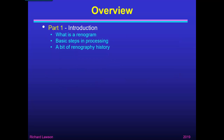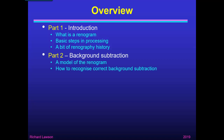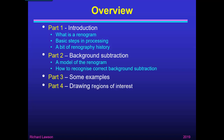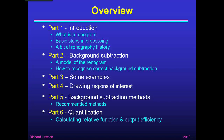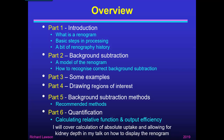The talk is divided into six parts. In part one, I'll give an introduction explaining what a renogram is, the basic steps involved in processing a renogram, and some relevant renography history. In part two, I'll discuss background subtraction and describe a model of the renogram to help recognise correct background subtraction. In part three, I'll show examples using different methods. Part four covers drawing regions of interest. Part five describes recommended background subtraction methods. Part six covers quantification — relative function and output efficiency. Calculating absolute uptake and kidney depth will be covered in a separate talk on how to display the renogram.